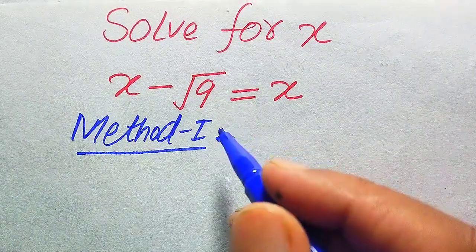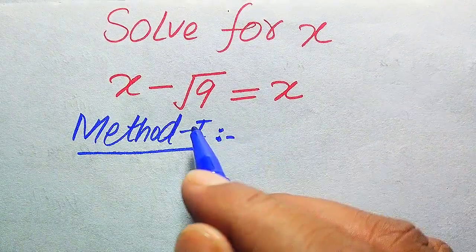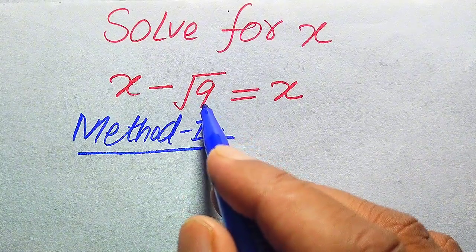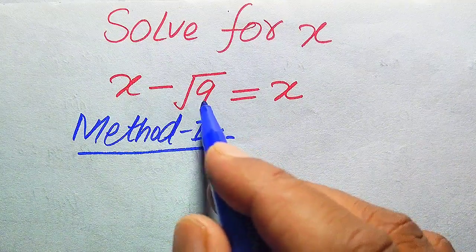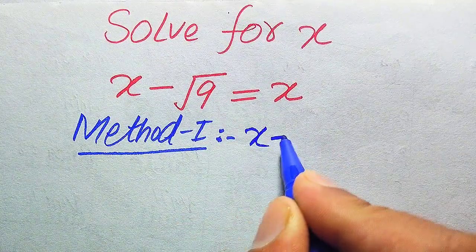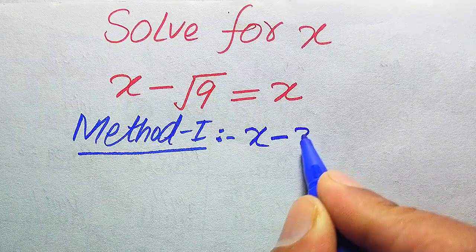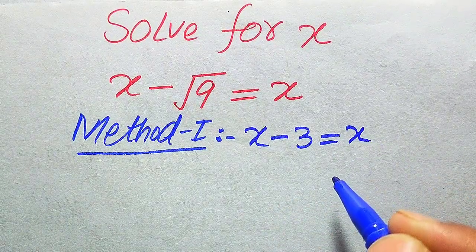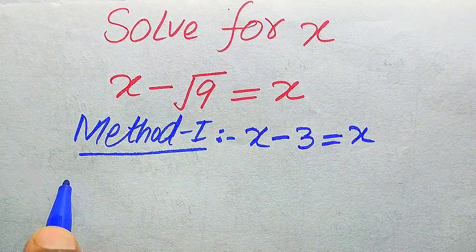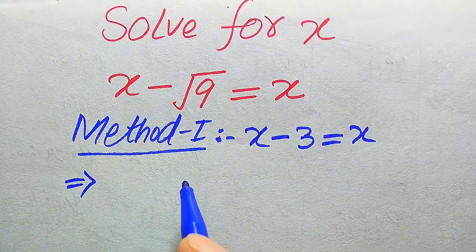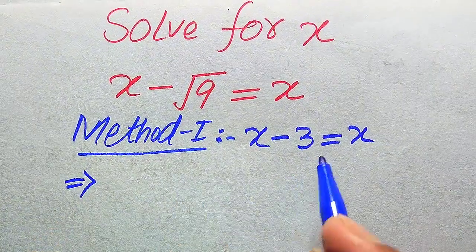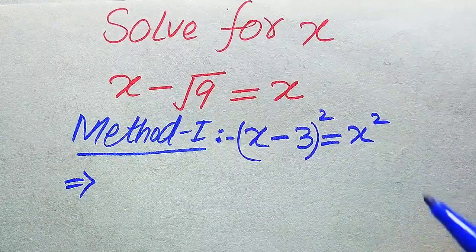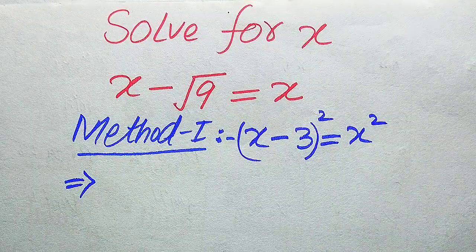Now we move toward the solution. First, we rewrite this equation: square root of 9 becomes 3, so the equation is x minus 3 equals x. In order to find the values of x, we take squaring on both sides, and it will be written in this form.